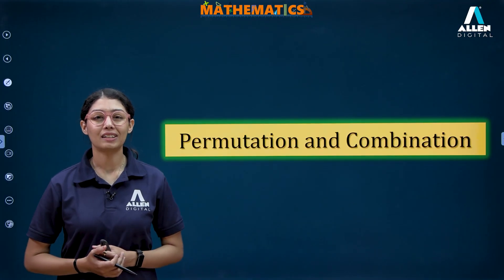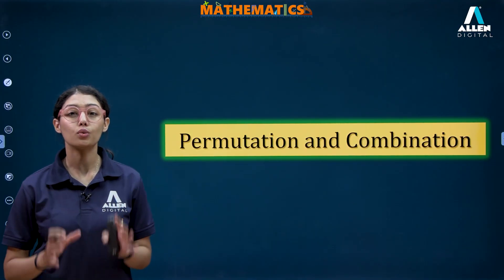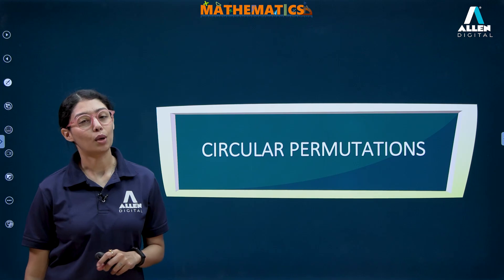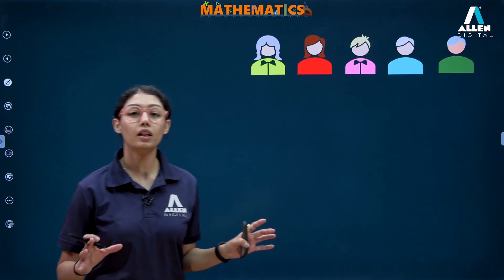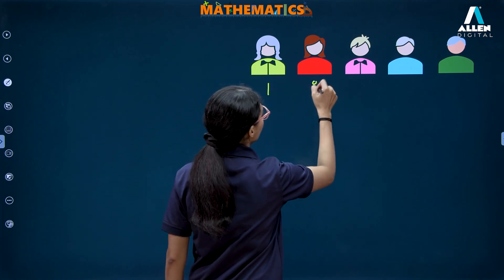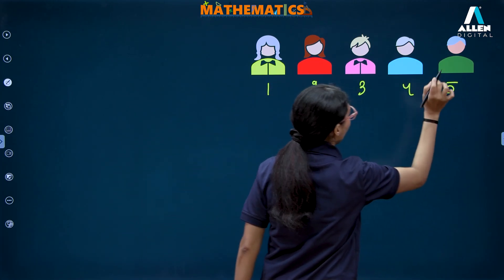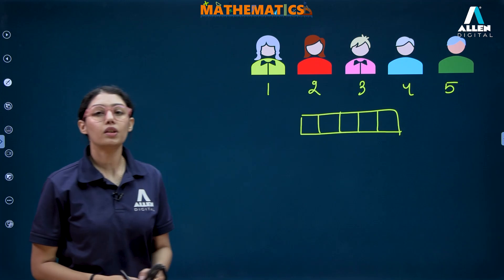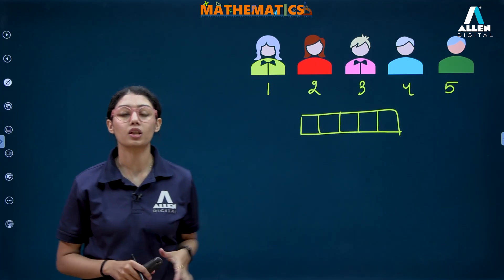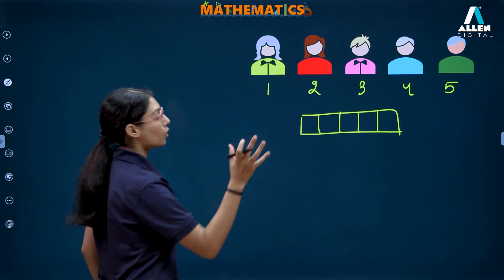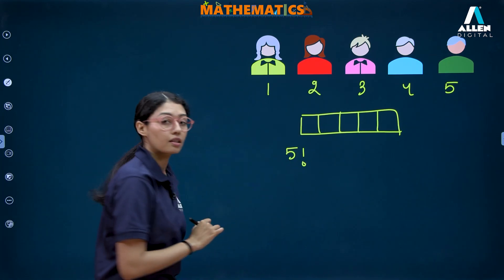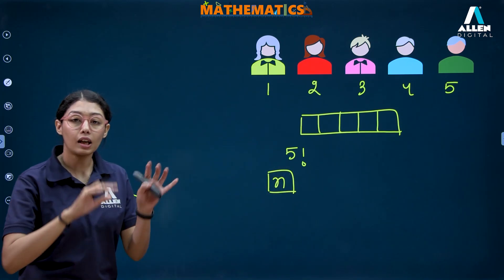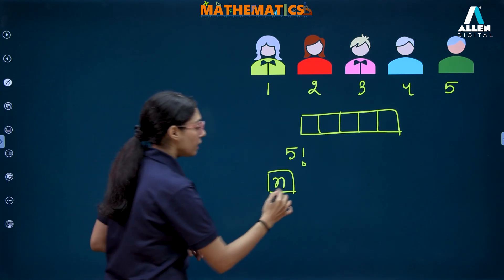Hello everybody, welcome to L&D Digital Classes. Here we are to learn a very important topic of the chapter permutation and combination, that is circular permutations. We all know what linear permutation is. Let's take an example: we have five people, one two three four and five, to be placed on five positions. Arranging five people on five positions can be done in five factorial ways. In general, n objects can be placed on n places in n factorial ways.